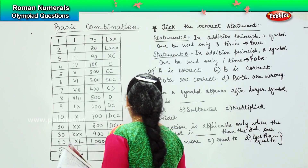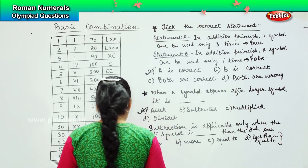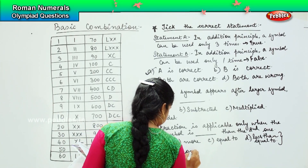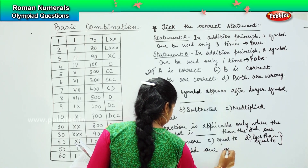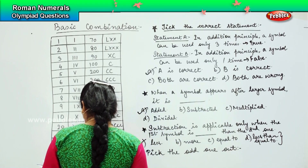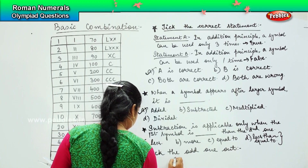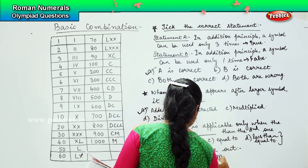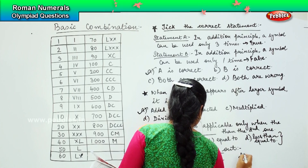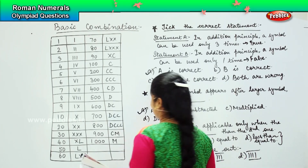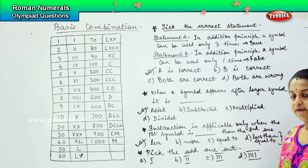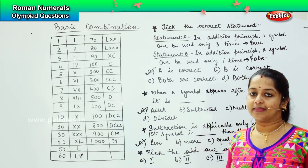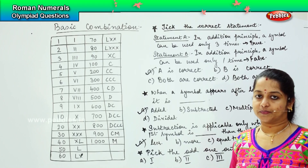Pick the odd one out. The options are: A - I, B - II, C - III, D - IIII. Which is the odd one out? Very good — it is option D, because the alphabet I is repeated four times and there is no such value in Roman numerals.